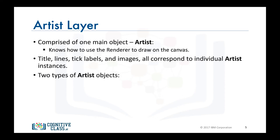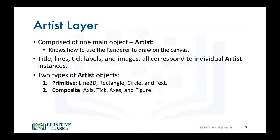There are two types of artist objects. The first type is the primitive type, such as a line, a rectangle, a circle, or text. The second type is the composite type, such as the figure or the axes. The top-level Matplotlib object that contains and manages all of the elements in a given graphic is the figure artist. And the most important composite artist is the axes, because it is where most of the Matplotlib API plotting methods are defined, including methods to create and manipulate the ticks, the axis lines, the grid, or the plot background.